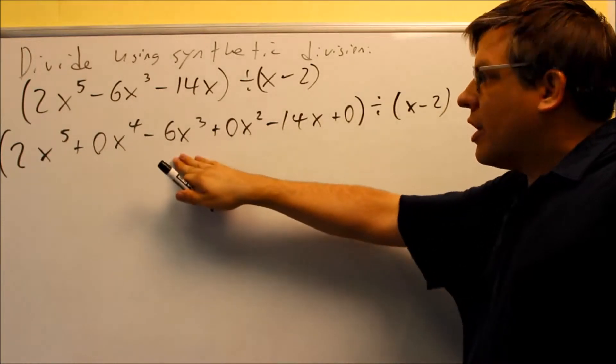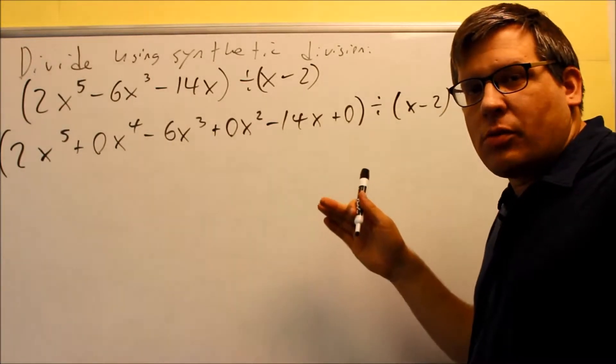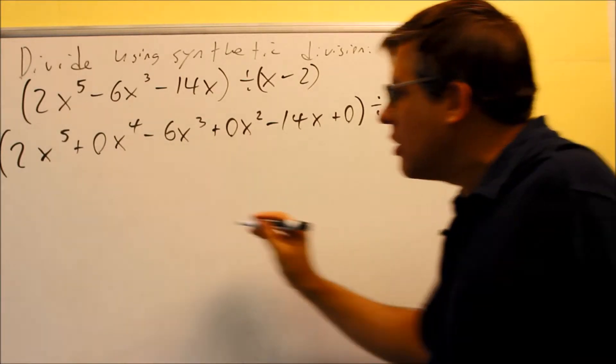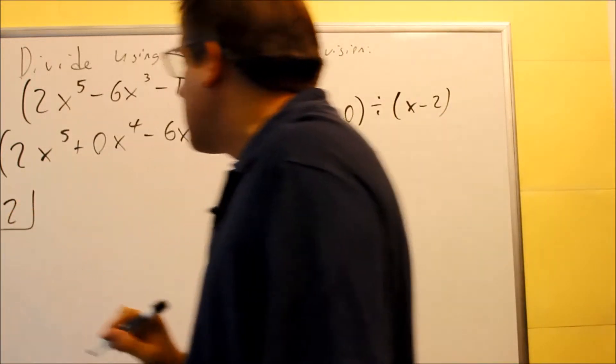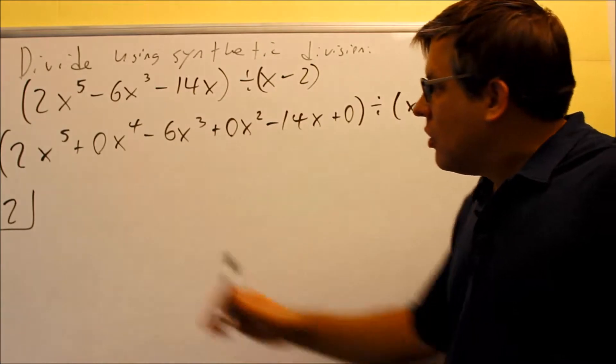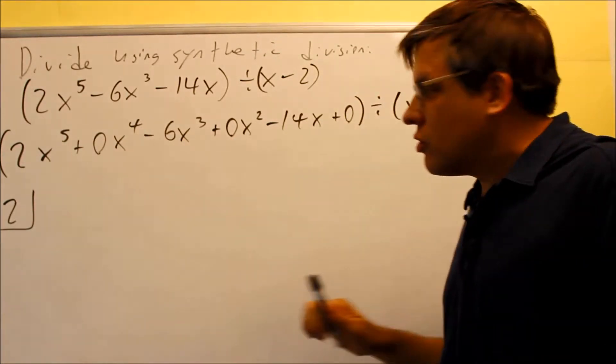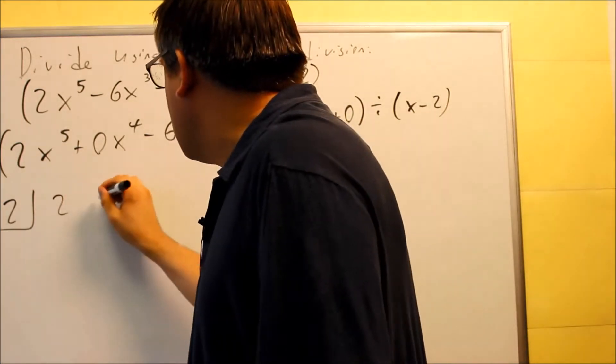So this is written out properly now. We're going to do the setup with our synthetic division. You're going to take the opposite sign of that number, negative 2, you make it positive 2. We put that inside of the box. Now that we have it written properly, we're going to write all this out, including the zeros. It's the coefficients only. So I have 2, 0,